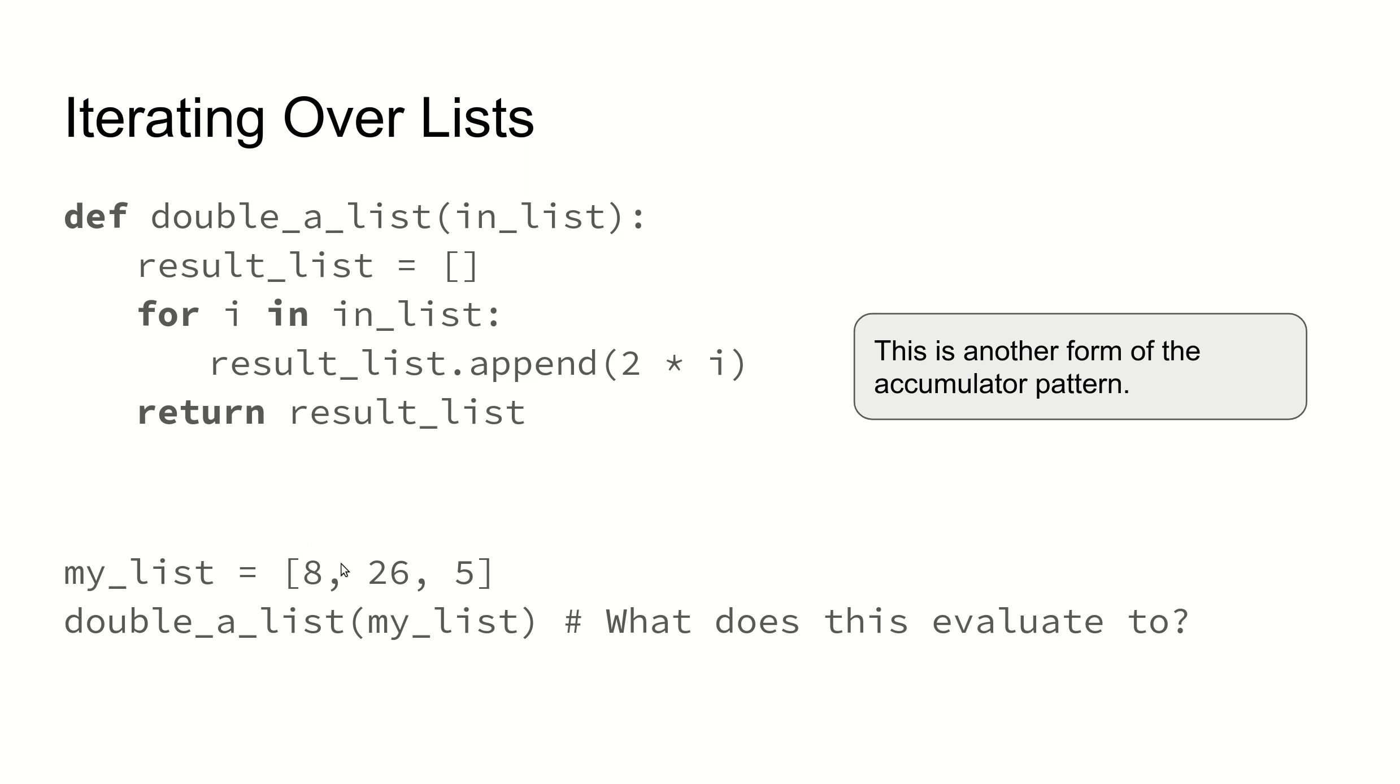So if you give me 8, 26, and 5, then call double_a_list on that list—notice that it had to be stored in a variable so that we could do that—then 8 will get doubled, we'll get 16. 26 will get doubled, we'll get 52. And 5 will get doubled, we'll get 10. So it evaluates to 16, 52, 10, which is, as you can see in here, a new list.